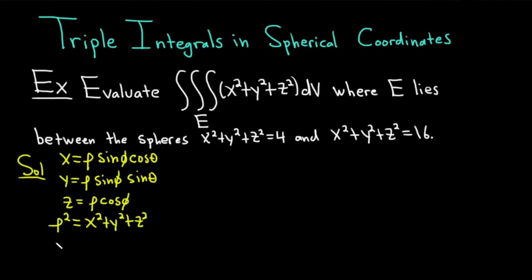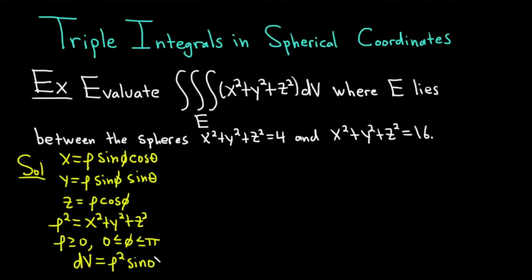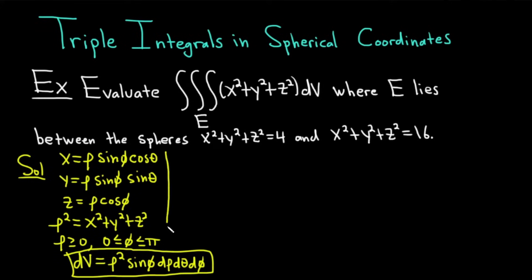We also have a very important formula that we're going to use in this problem: rho squared is equal to x squared plus y squared plus z squared. You see that multiple times here — in the integrand and in the spheres — so it's super useful. Also, rho is greater than or equal to zero, and phi is between zero and pi. The last formula is perhaps the most important: dV is replaced with rho squared sine phi d rho d theta d phi. This is key for the integration process.